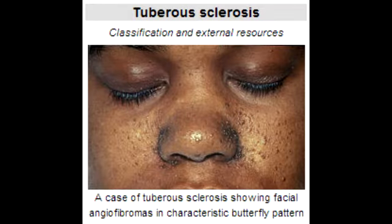What is tuberous sclerosis? Tuberous sclerosis is a rare multi-system genetic disease that causes non-malignant tumors to grow in the brain and other vital organs such as kidneys, heart, eyes, lungs, and the skin. What is the mnemonic to help you remember everything that happens in tuberous sclerosis?